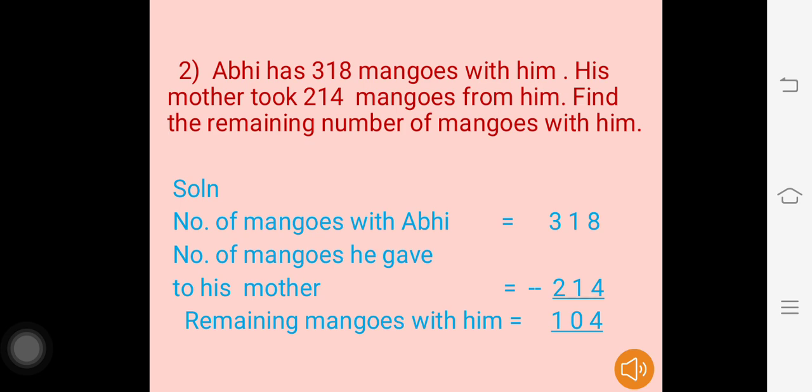214. These are 3-digit numbers. Writing the numbers according to place value, start the subtraction from the units or 1's place. 8 minus 4 is 4; 1 minus 1 is 0; 3 minus 2 is 1. The remaining mangoes with Abhi are 104. The statement also goes: remaining mangoes with him are 104.